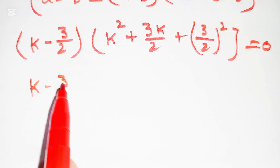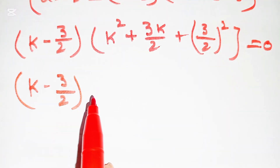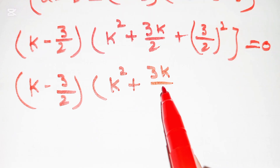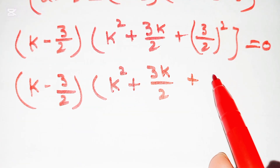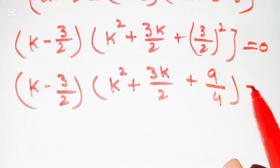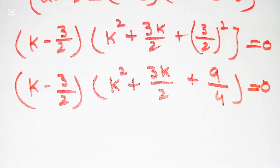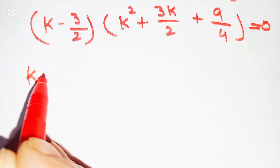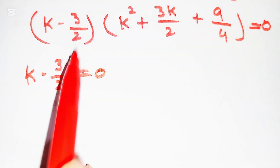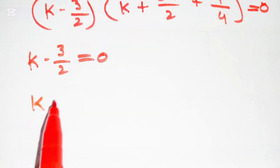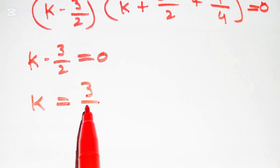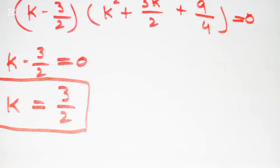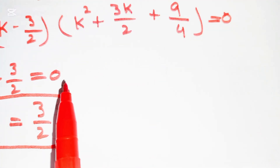We get k − 3/2 = 0, which gives the first value k = 3/2. The second factor k² + 3k/2 + 9/4 = 0 will be solved using the quadratic formula.